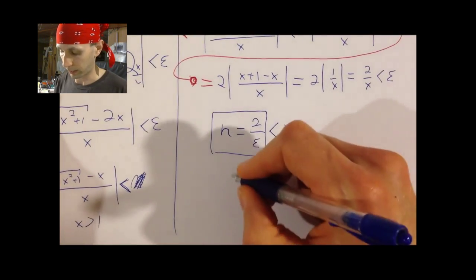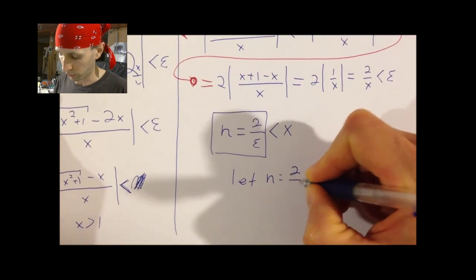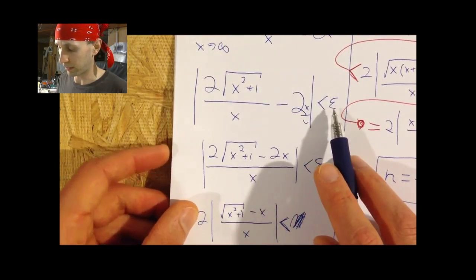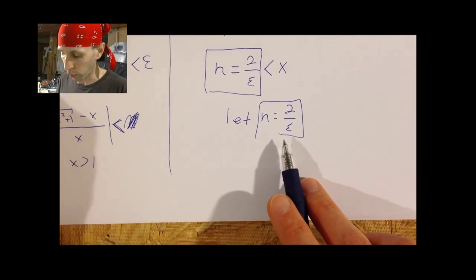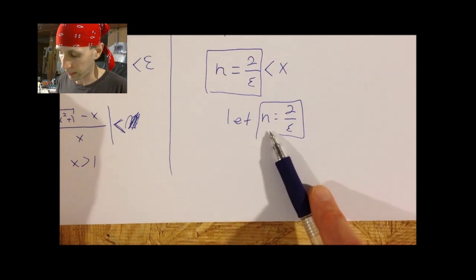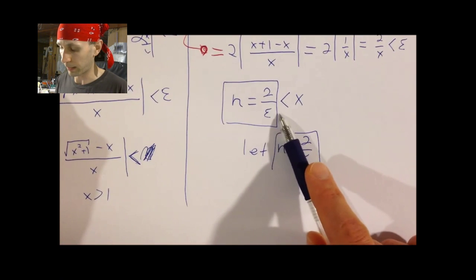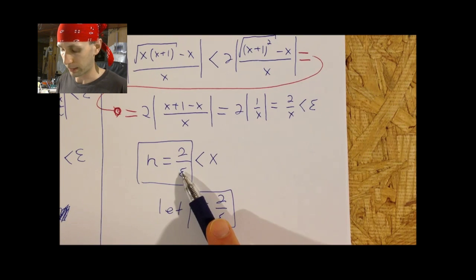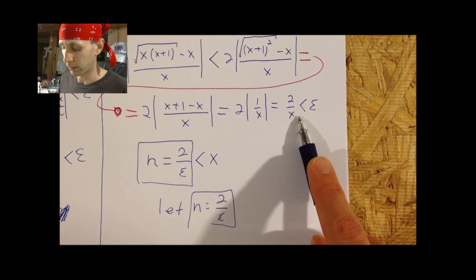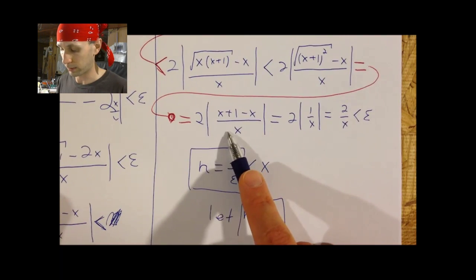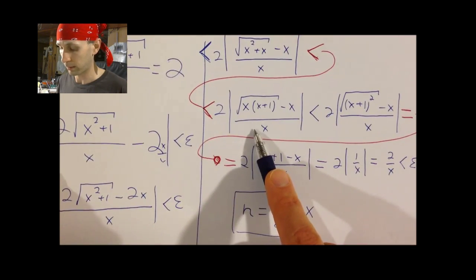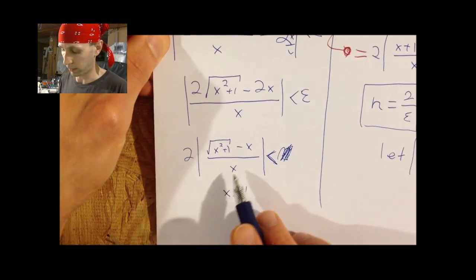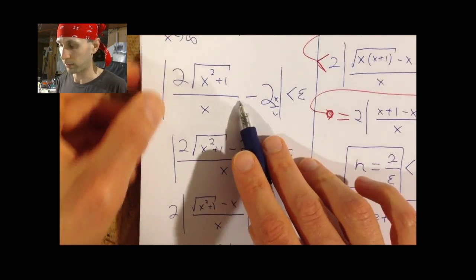All I have to do is rearrange to get 2 over epsilon is less than x. That is what I will use for my value of N — let N equal 2 over epsilon. Walking backwards: if N equals 2 over epsilon and x is greater than that number, then all this work follows. Provided that x is greater than 2 over epsilon, that implies 2 over x is less than epsilon. And 2 over x equals this, which is equal to this, which is greater than our original expression, and hence the proof is done.